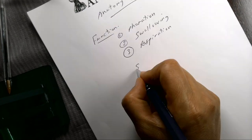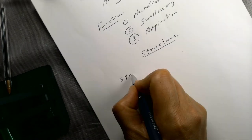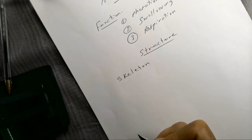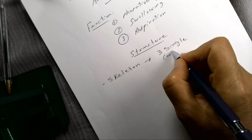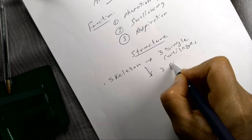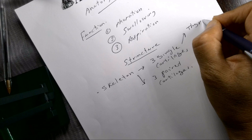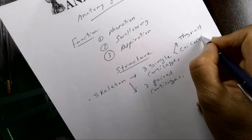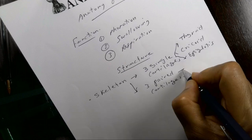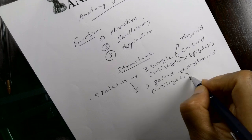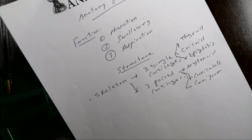The structure of the larynx — you need to understand that we have a laryngeal skeleton. This skeleton is made by three single cartilages and three paired cartilages. The three single cartilages are: thyroid cartilage, cricoid, and epiglottis. The three paired cartilages are: arytenoid, corniculate, and cuneiform cartilage. So this is the skeleton.